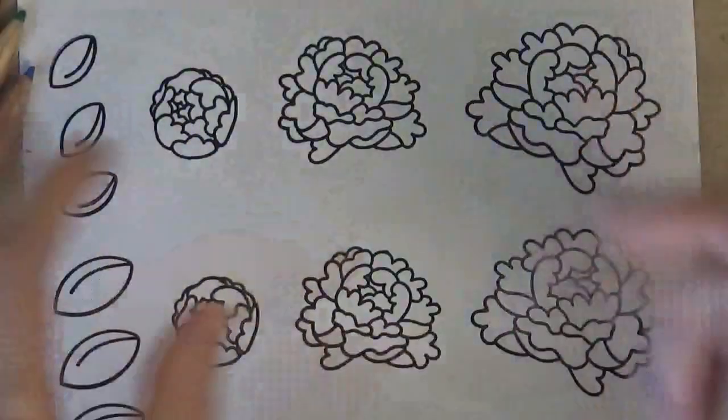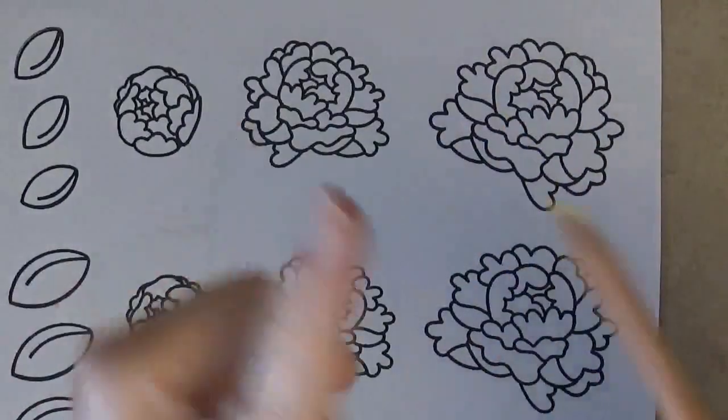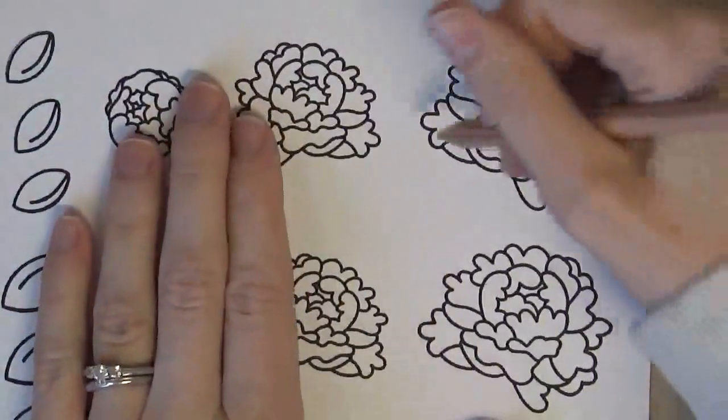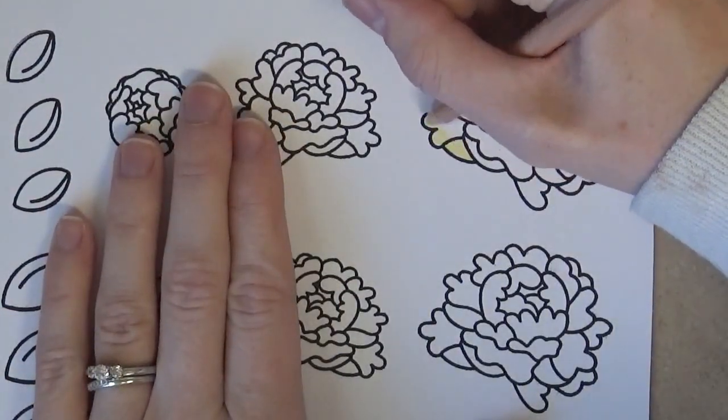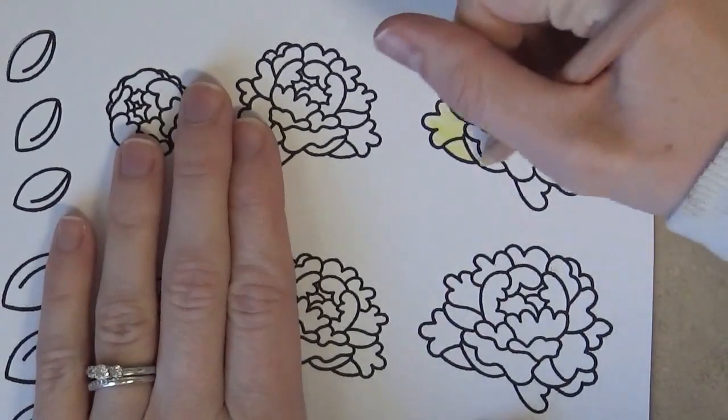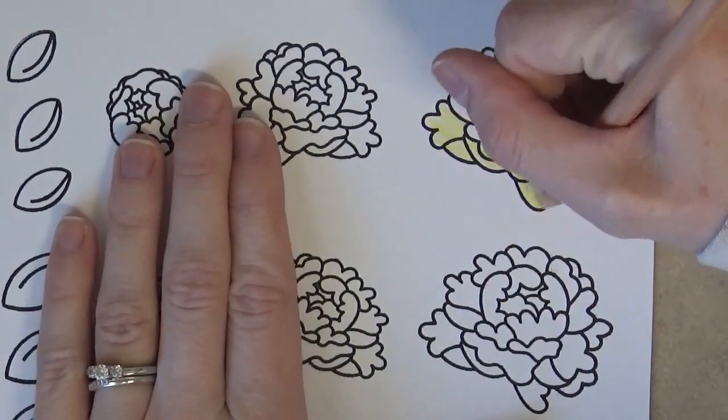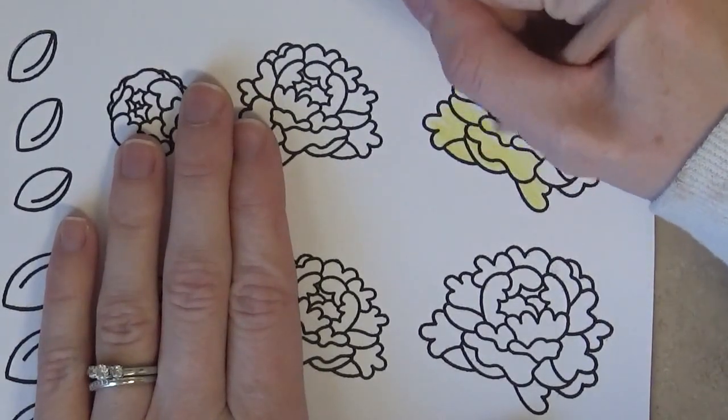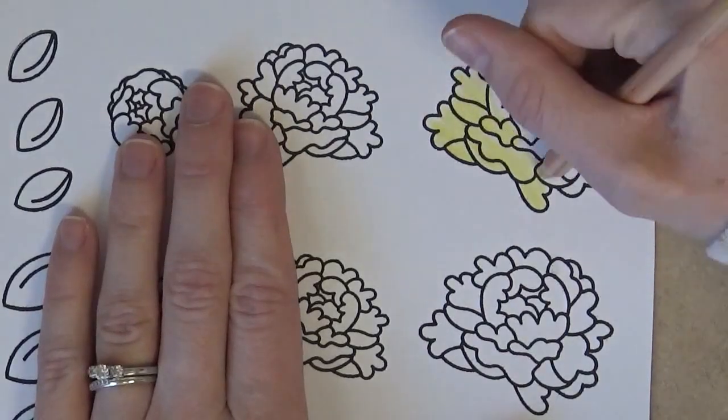So I figured out I like using the lighter colors first. So I like to put down a layer of just the lighter color over the whole image. And as I'm coloring I notice it's a really smooth type of colored pencil. It goes on really smooth and it just feels really nice. Not as rough as some other colored pencils I've used.